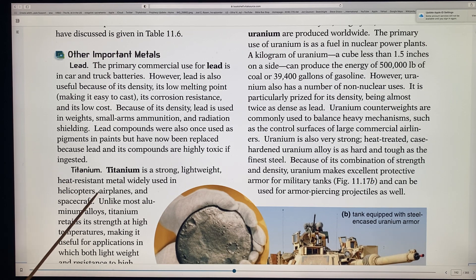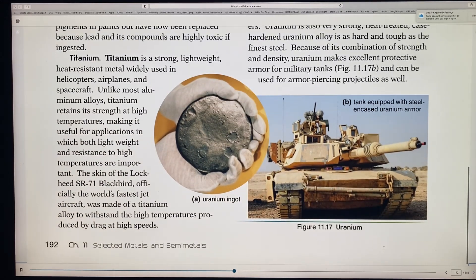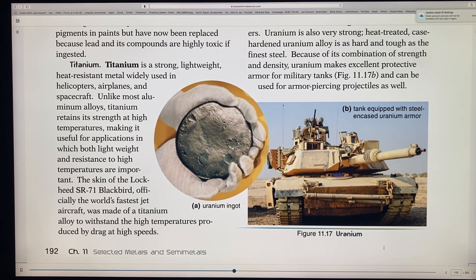So let's go on to titanium. Titanium is a strong, lightweight, heat resistant metal. They use it in helicopters and airplanes and spacecraft. Unlike aluminum, it retains its strength at very, very high temperatures. In fact, titanium, a lot of people think titanium is the strongest of metals. Here's where it says the skin of Lockheed SR-71 Blackbird, officially the world's fastest jet aircraft was made of titanium. And this titanium alloy to alloys to withstand the high temperatures produced by the drag at high speeds. So titanium is that metal that wherever there's a lot of stress and a lot of heat, titanium does well.